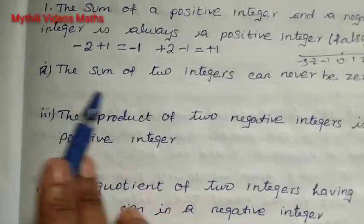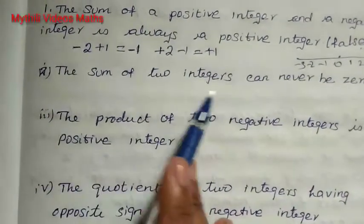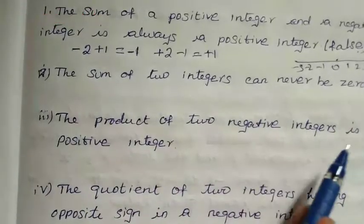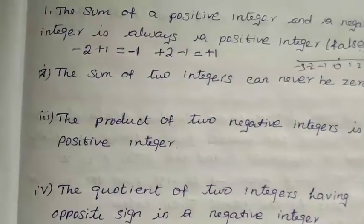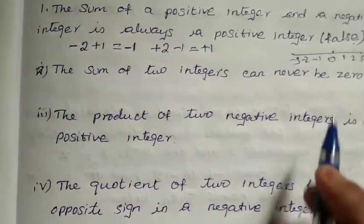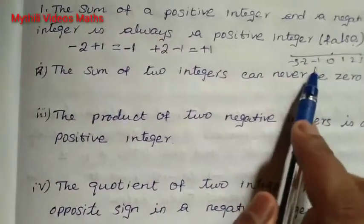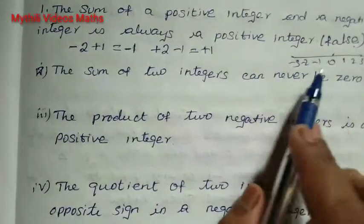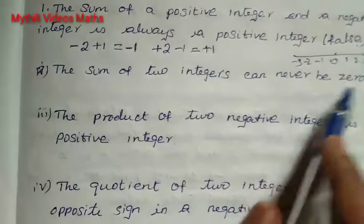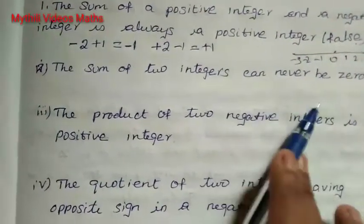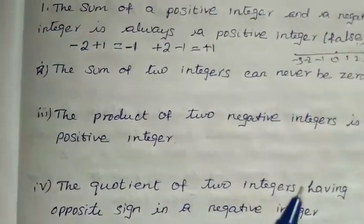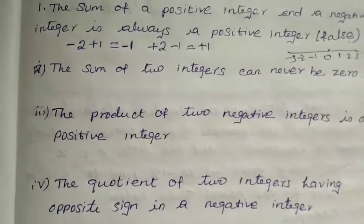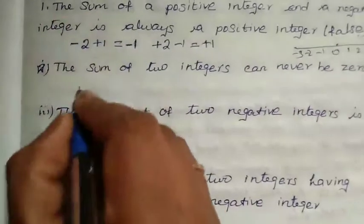Second statement: the sum of two integers can never be zero. Sum means add. They are telling it can never be zero.